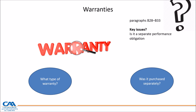If you go to your B28 and B33, it highlights the different types of warranties: assurance type and service type. You need to make this distinction and pick out the key issues. The key issue is: is the warranty a separate performance obligation? To determine this, you need to know what type of warranty it is and whether it was purchased separately. With an assurance type, the customer is not getting an additional good or service — you're just guaranteeing the good is working as intended, so it's not a separate performance obligation.